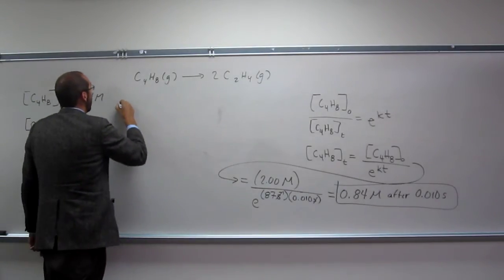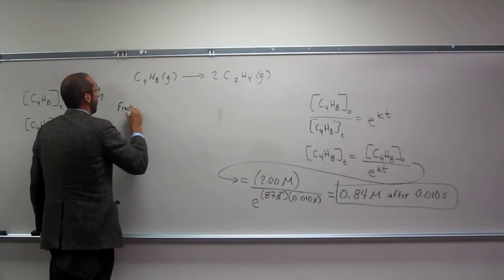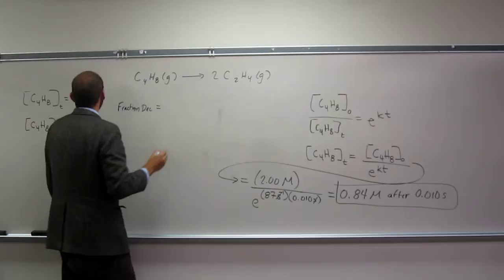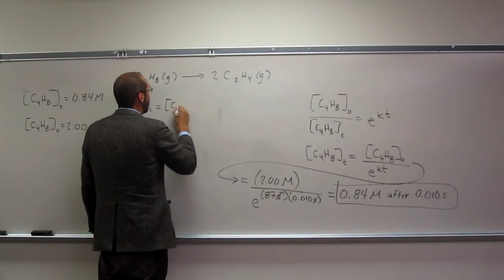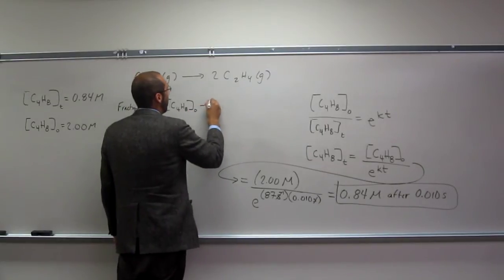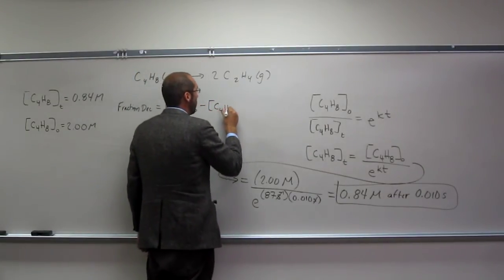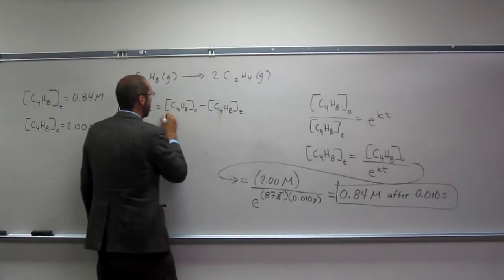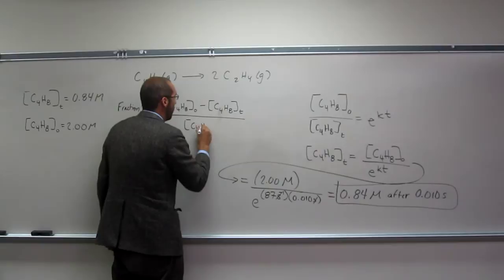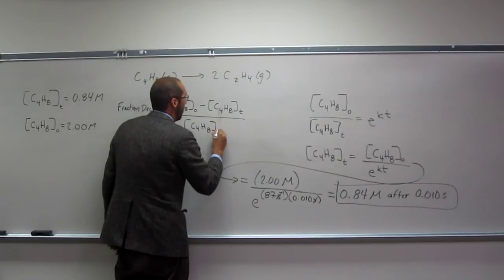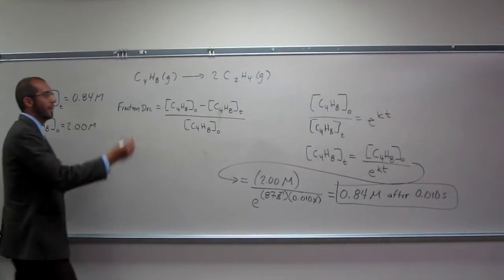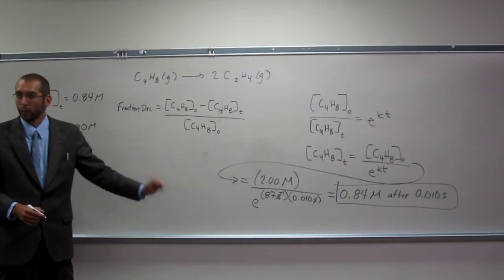So, let's say, it's going to be C4H8O minus C4H8T divided by C4H8O. Does that make sense? If it doesn't make sense, maybe it'll make sense when we plug the numbers in.